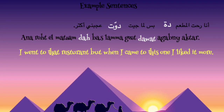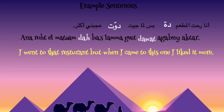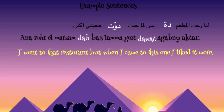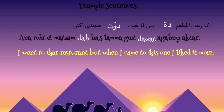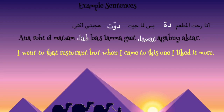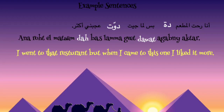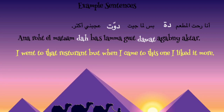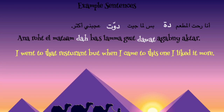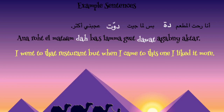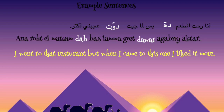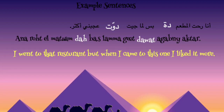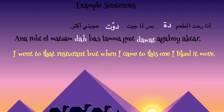These sentences are going to be in Egyptian Arabic. Let's read our first sentence together: 'Ana roht el mat3am da, bas lamma geet dawat 3agabni aktar.' 'Ana roht' means I went. 'El mat3am' means restaurant. 'Da' means that — so 'I went to that restaurant'. I'm talking about a restaurant I went to before.